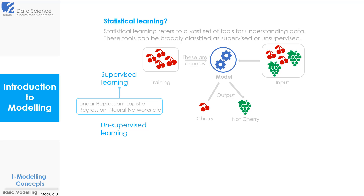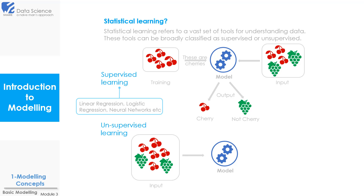Next we have unsupervised learning. Here we do not have information available on training data with us. Learning takes place on the input data directly. It categorizes the data according to their similarities, patterns, differences, etc. Let's say we have our input data. We create our model and give the input data to the model. Then it will give us the output by learning through our input data directly. So that is how unsupervised learning works.